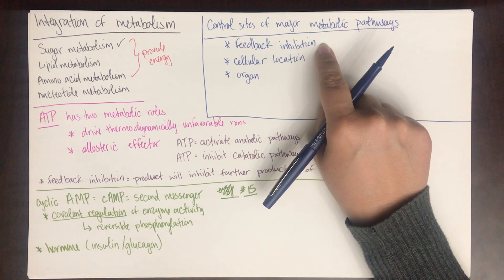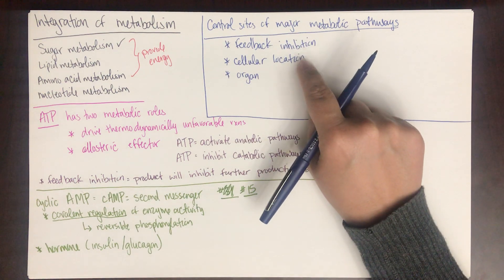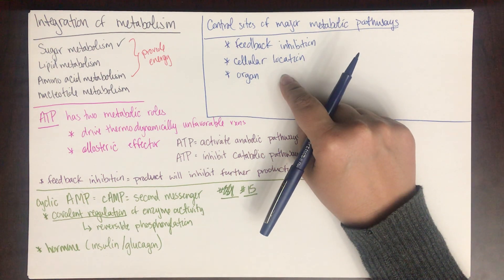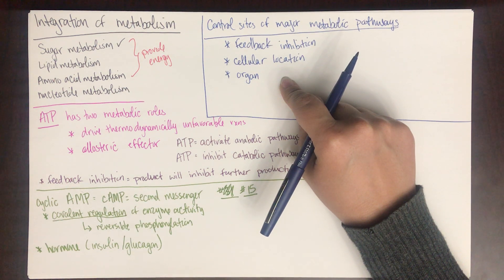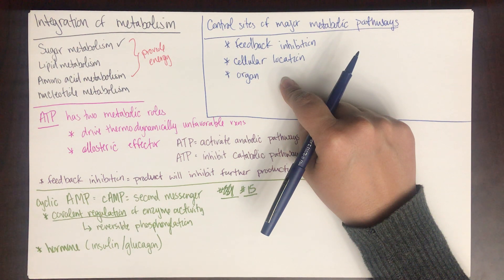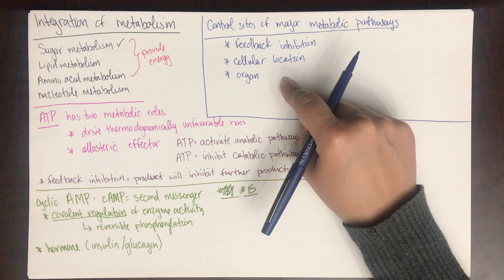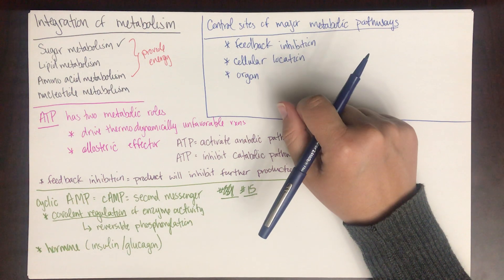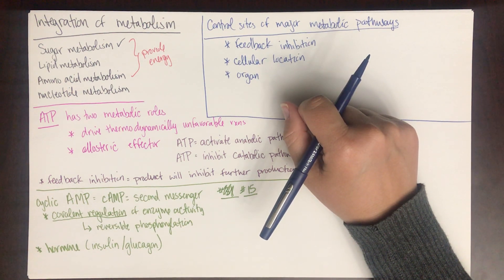The citric acid cycle only happens in the mitochondria. It is inhibited by high ATP, because ATP is a product of the citric acid cycle — if there's high ATP, that inhibits the process. Similarly, NADH is also a product of the citric acid cycle, so high NADH will inhibit the citric acid cycle. There are slides covering each of these.